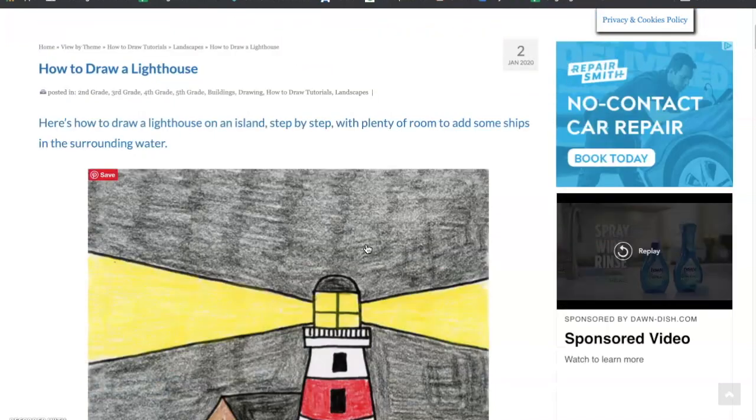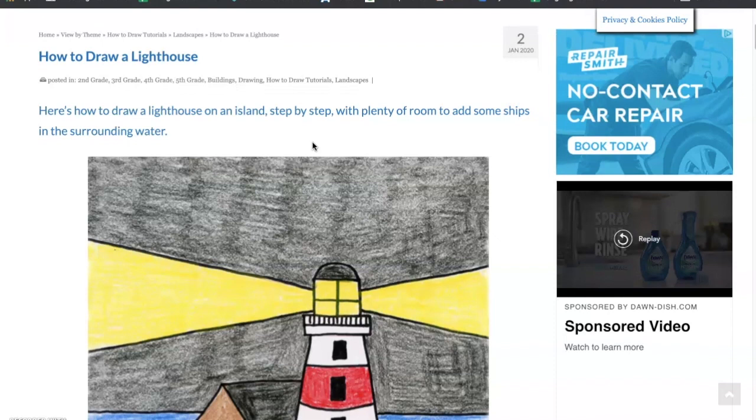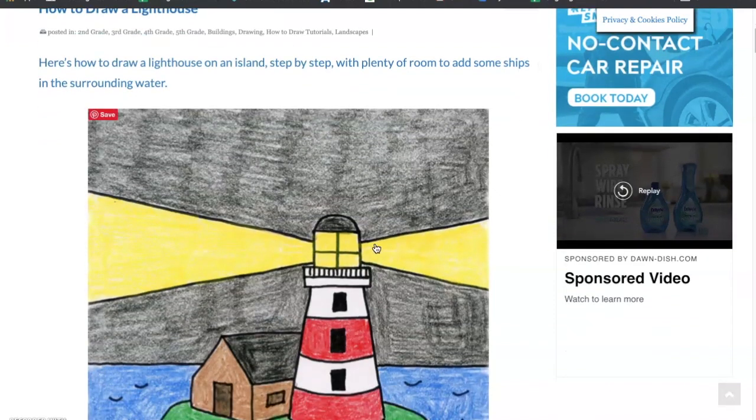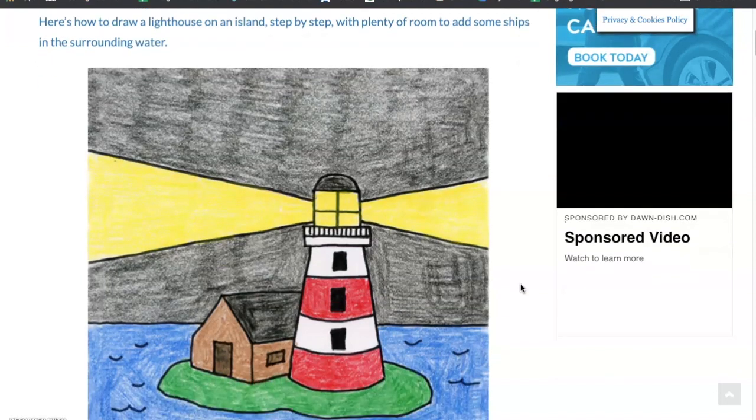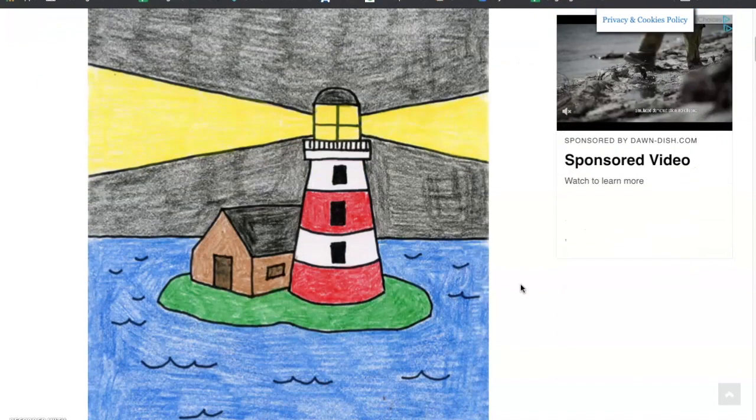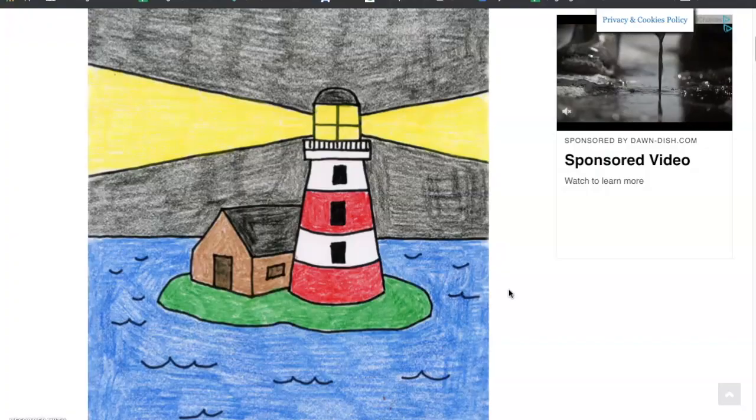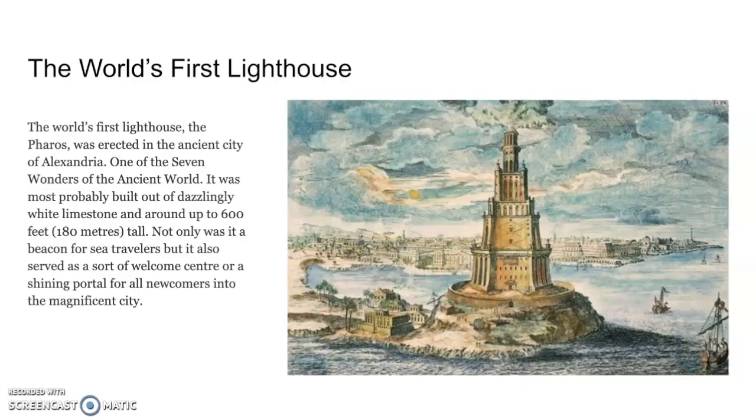Today we are going to be drawing a lighthouse, which is usually on an island. It serves as a light in the darkness for ships and sailors to get home safely and to get through stormy waters. Here is an example of what our lighthouse could look like today.